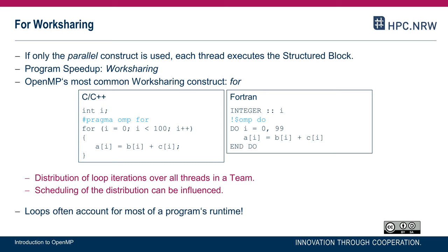If you remember from the last video session, we looked at the parallel construct which provides us what we call the team of threads. We have the initial thread and the set of worker threads which together execute the structured block — a code block in C and C++ programs — out of which the parallel region consists. However, if we just use a parallel region without anything else, each thread within the team will execute the content of the parallel region. To get a speedup we have to distribute the work among the threads, and in OpenMP we have a set of so-called work sharing constructs which do exactly this job.